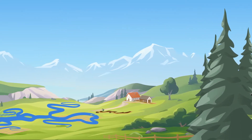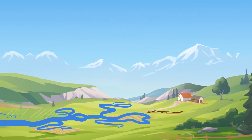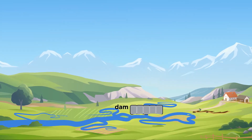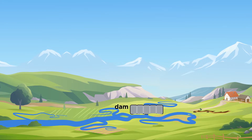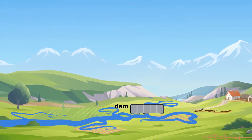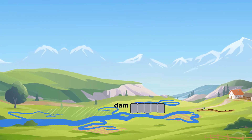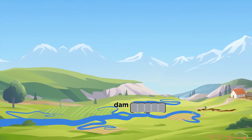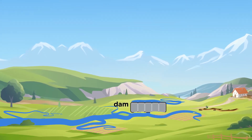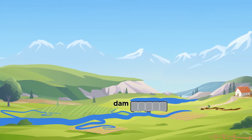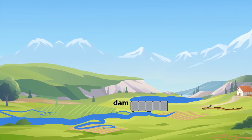Another solution to stop soil erosion is to build a structure. A dam is one type of structure. It is a barrier that stops or slows the flow of water. Dams can be small or very large in size. They are built across the flow of water, which keeps the water on one side. Dams help prevent flooding in areas where water runoff tends to move very fast.